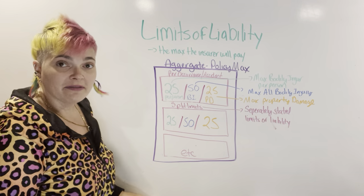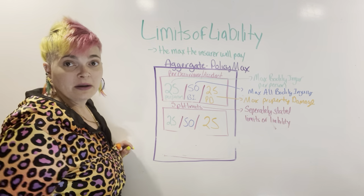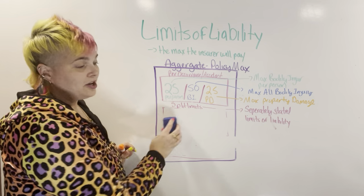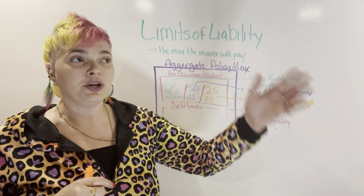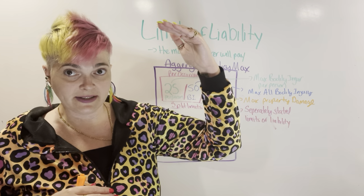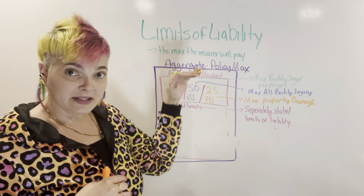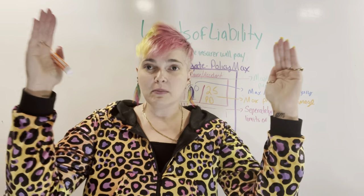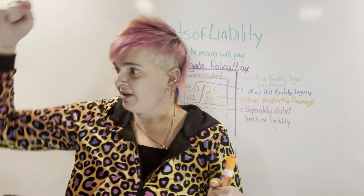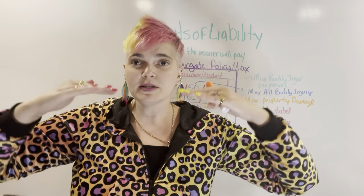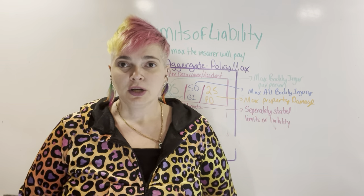The aggregate lowers every time you have an accident. Think of the aggregate as a big bucket of money — every time you have an accident, you're taking money out of the bucket: $25,000/$50,000/$25,000 each time. That bucket lowers and lowers. When your policy renews at the end of the six months, the aggregate will restore itself and refill back to the full amount.